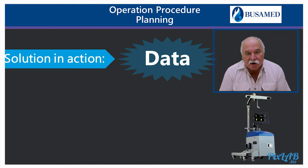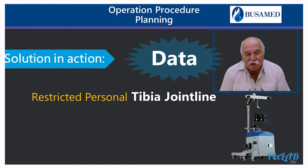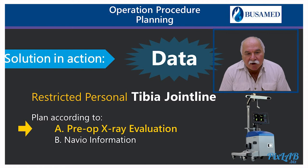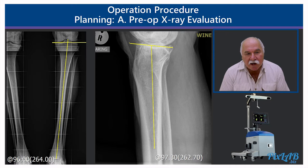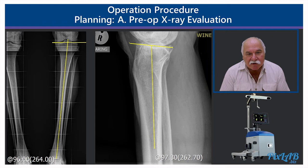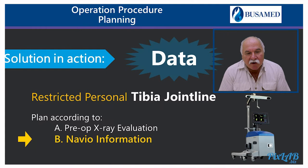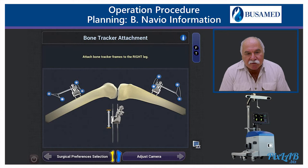Our solution in action starts with collecting data. The personal restricted joint line of the tibia is what we are looking at. We evaluate the preoperative X-rays of the patients. Looking at this patient example, we have a hip-knee-ankle angle of 7.8 degrees. Secondly, we have an MPTA — medial proximal tibial angle — of 6 degrees, not 90 degrees. Thirdly, we have a posterior slope of 7 degrees.